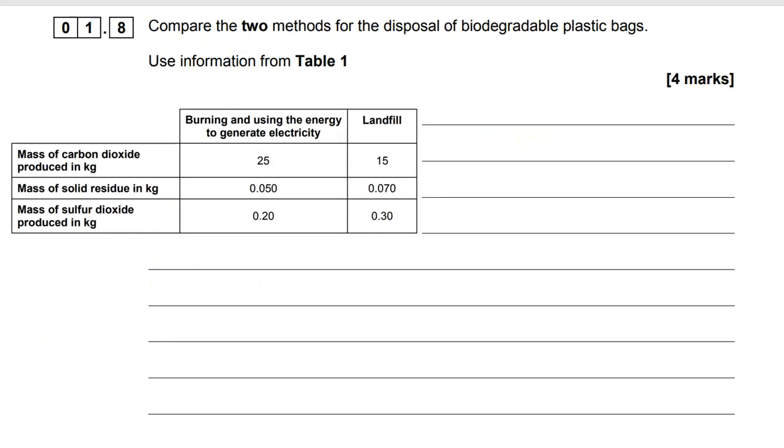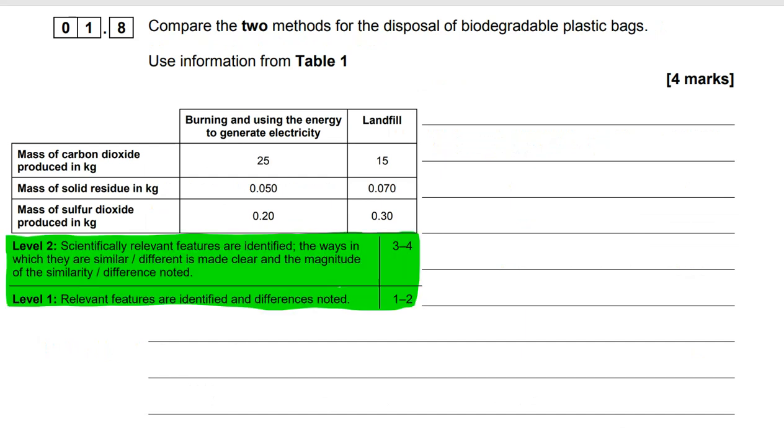Moving on to 1.8, where you are asked to compare two methods for the disposal of biodegradable plastic bags. It's a four mark question, but it follows a very similar format to the six markers that you will be familiar with. To get to level 2, 3 or 4, you need scientifically relevant features identified. You need to talk about similarities and differences. It needs to be made clear, and the magnitude of the similarity or difference is noted.